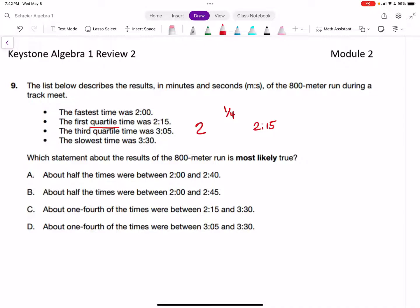The third quartile is at 3:05, and the slowest time is 3:30. Between the smallest value and Q1 is a quarter. Between Q3 and the largest value is also a quarter of the data. So between Q1 and Q3, the two quartiles, the other half of the data lives.